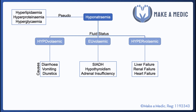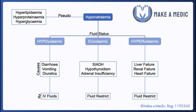The treatment of hyponatremia depends heavily on treating the underlying cause. However, initially we can make sure things don't get any worse. In hypovolemia, the circulating fluid volume is depleted, so we should give IV fluids to help replenish that. In euvolemic and hypervolemic hyponatremia, the patient should be fluid restricted, as you don't want to increase the volume of fluid within which the salt is being diluted.